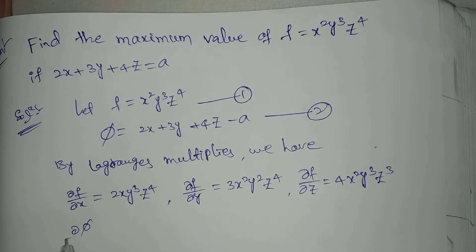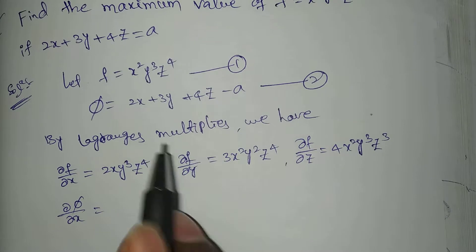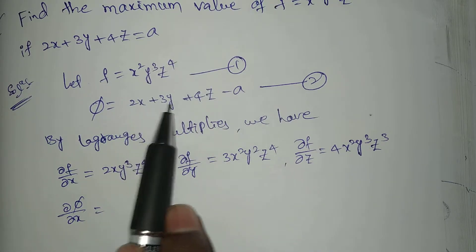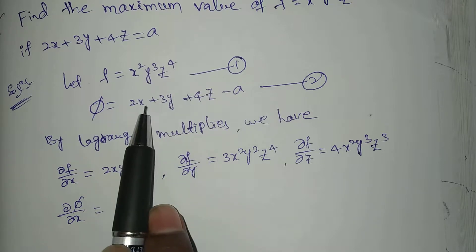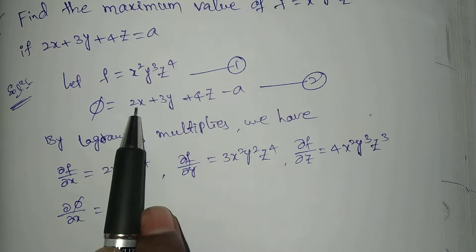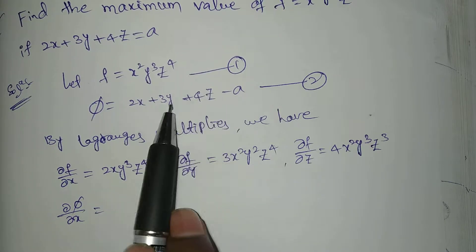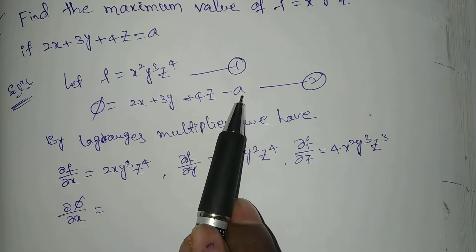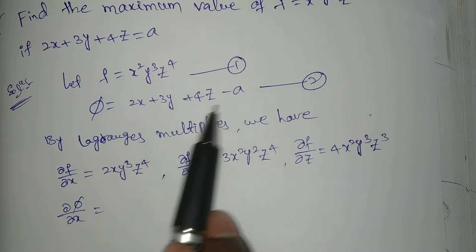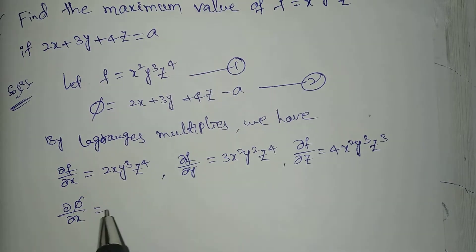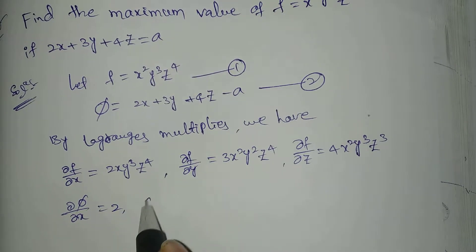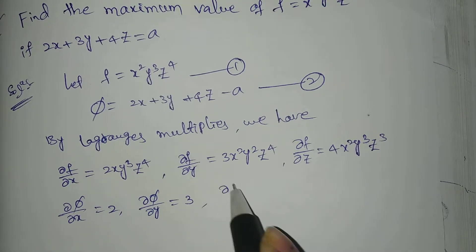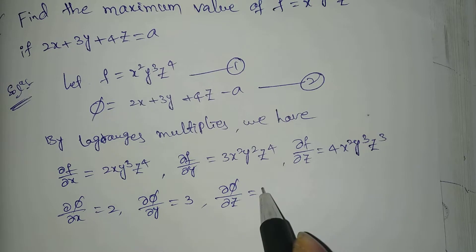Now for the constraint function φ, since x, y, z are separate variables, ∂φ/∂x equals 2. The other variables y, z, and a are treated as constants and become zero. Similarly, ∂φ/∂y equals 3, and ∂φ/∂z equals 4.